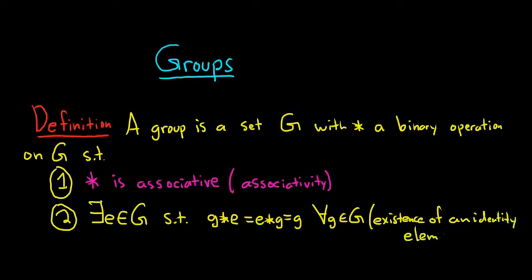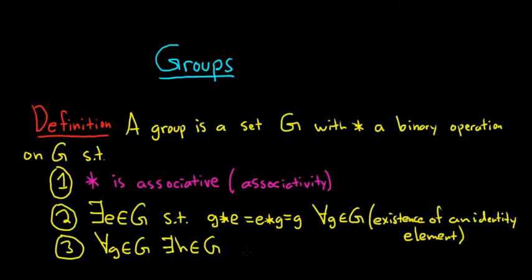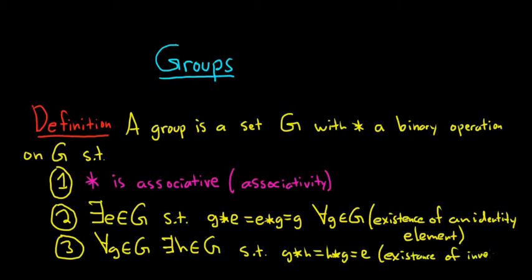And three: for every little g in capital G, we can find some little h in G such that g star h equals h star g, and that equals your identity element e. This is called the existence of inverses. So a group is a set G with star a binary operation, where you have associativity, the existence of an identity element, and the existence of inverses.